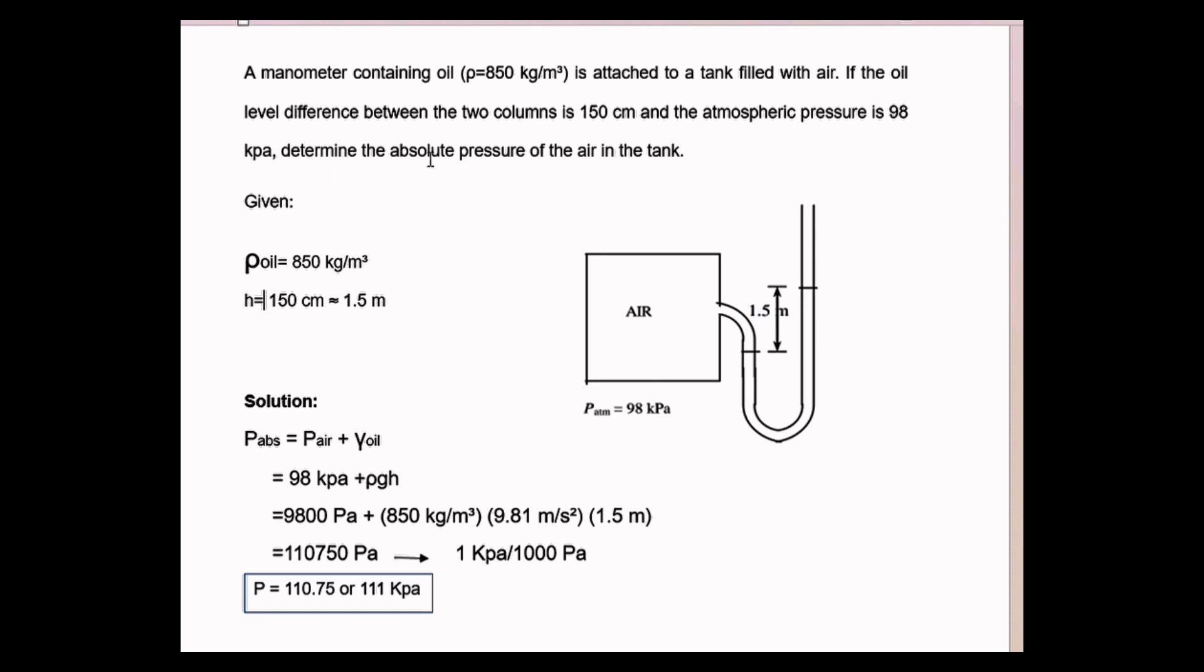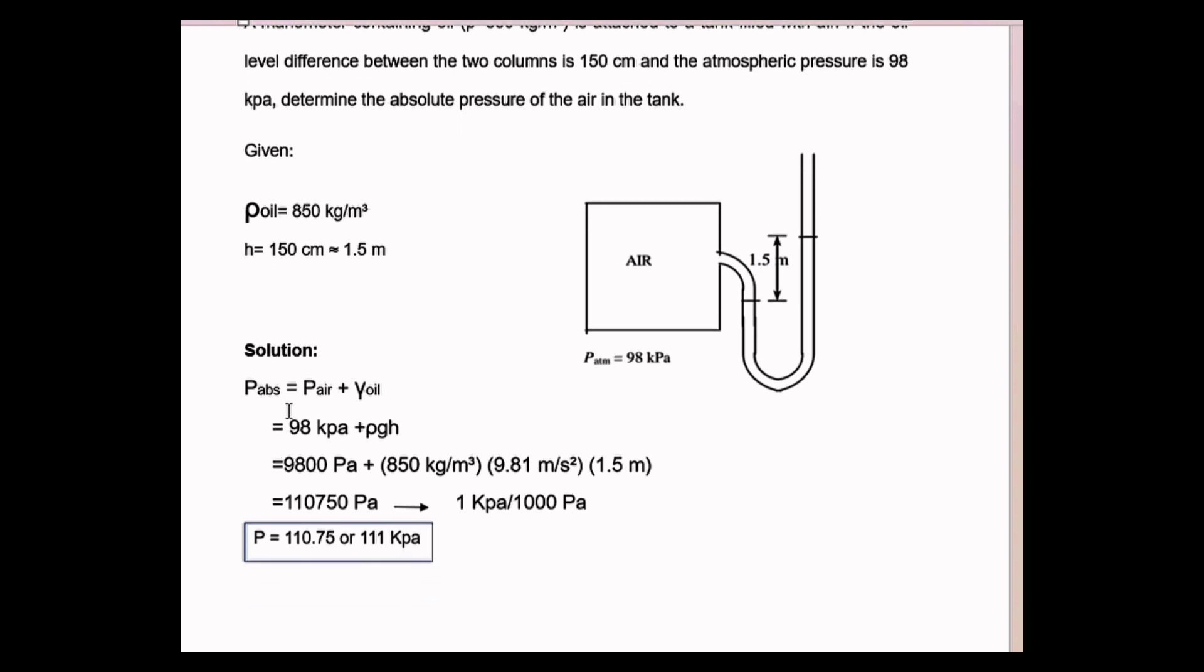Since we need to determine the absolute pressure, we need to use the absolute pressure formula. In order to find the absolute pressure, we have P_abs = P_atm + γh. Since P_atm is given as 98 kPa, plus the specific weight of oil which can be written as density times gravity times height.